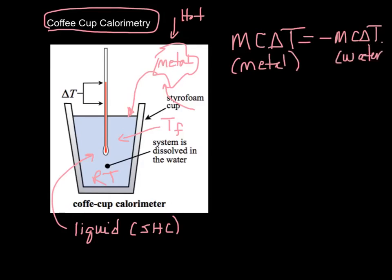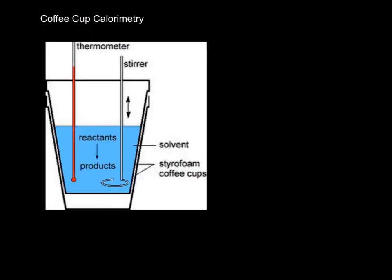So on the left, we would be talking about the mass of the metal, the specific heat of the metal, the change in temperature of the metal. The mass of the specific heat of the water, and the change in temperature of the water. So that's a pretty simple thing, and I'll show you an example of that in a minute.